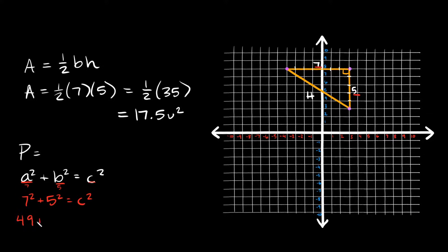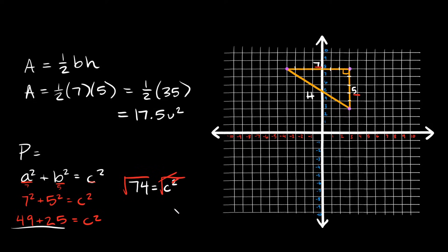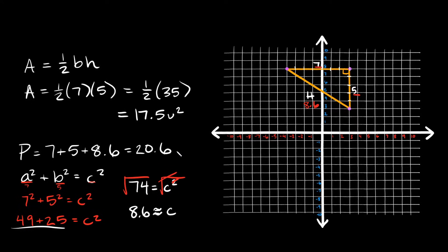So we'll have seven squared plus five squared equals c squared. Seven squared is forty-nine, five squared is twenty-five, giving us seventy-four equals c squared. Taking the square root of both sides, c equals the square root of seventy-four, which is approximately eight point six. So to find the perimeter: seven plus five plus eight point six equals twenty point six units.